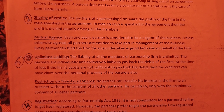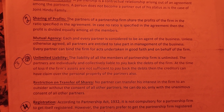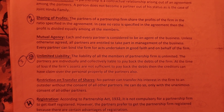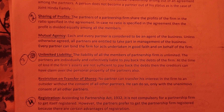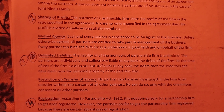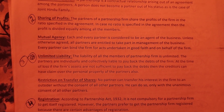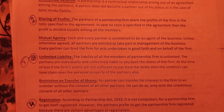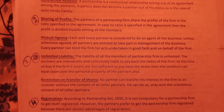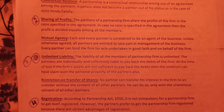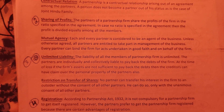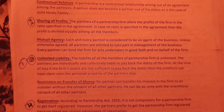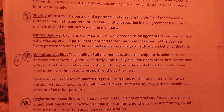Number four: Mutual Agency. Each and every partner is considered to be an agent of the business. Unless otherwise agreed, all partners are entitled to take part in the management of the business. Every partner can bind the firm for acts undertaken in good faith and on behalf of the firm.